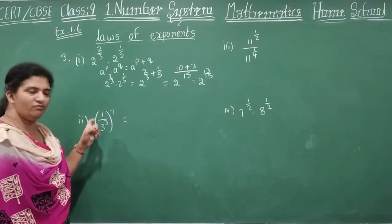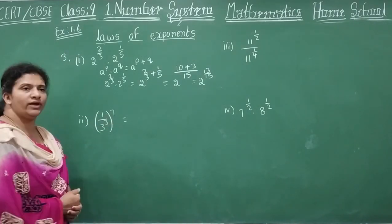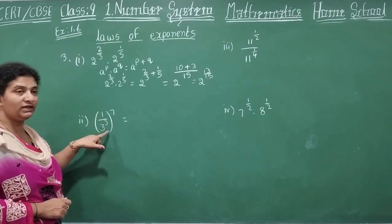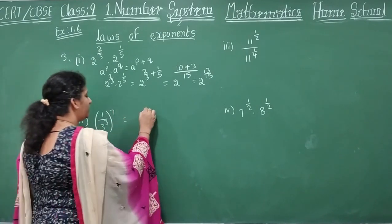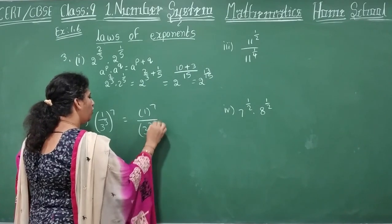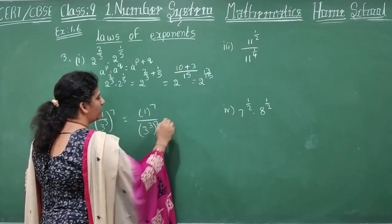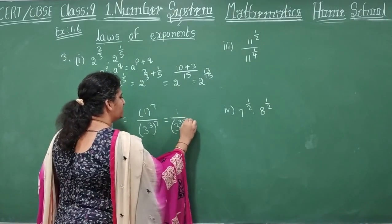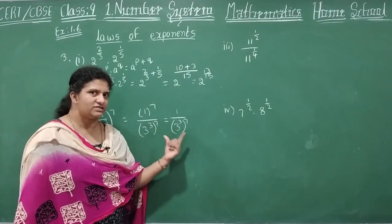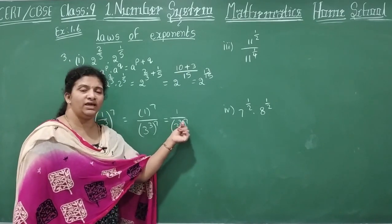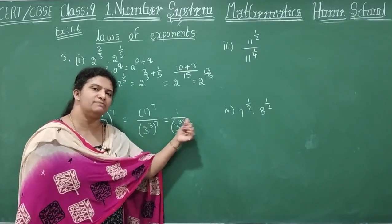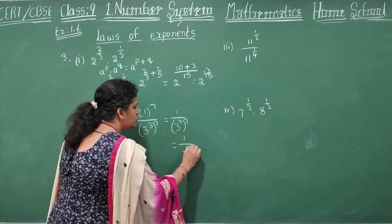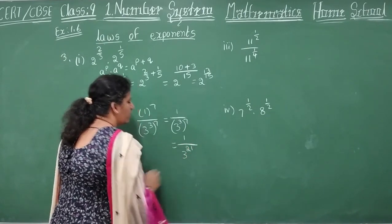Second problem: 1 by 3 power 3, whole power 7. Split the power for numerator and denominator: 1 whole power 7 by 3 power 3 whole power 7. One multiplied 7 times is 1. For the denominator, apply Law 2 — A power P whole power Q, powers are multiplied: 3 power 3 times 7 equals 3 power 21. So the final answer is 1 by 3 power 21, or equivalently 3 power minus 21.